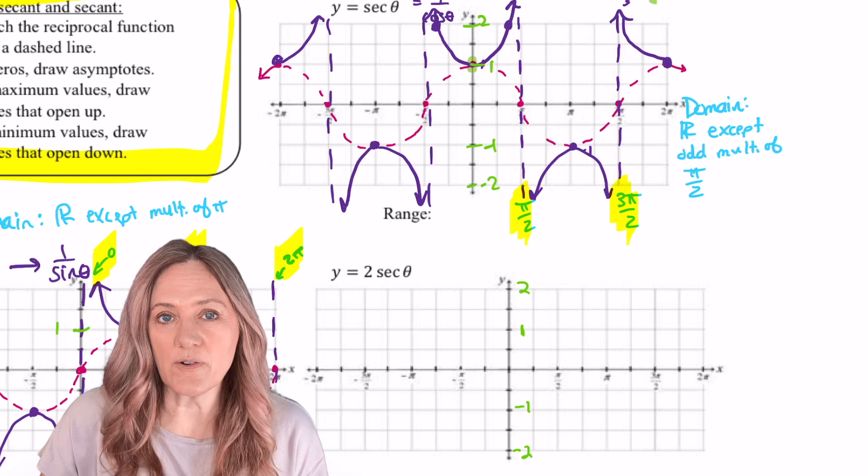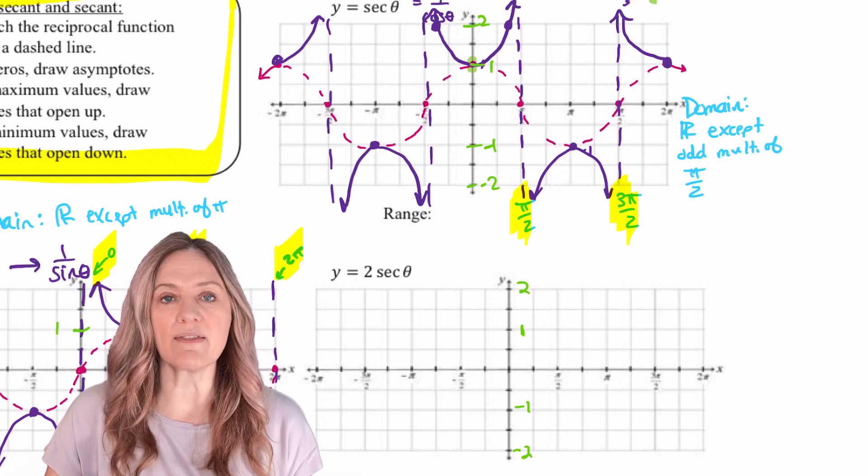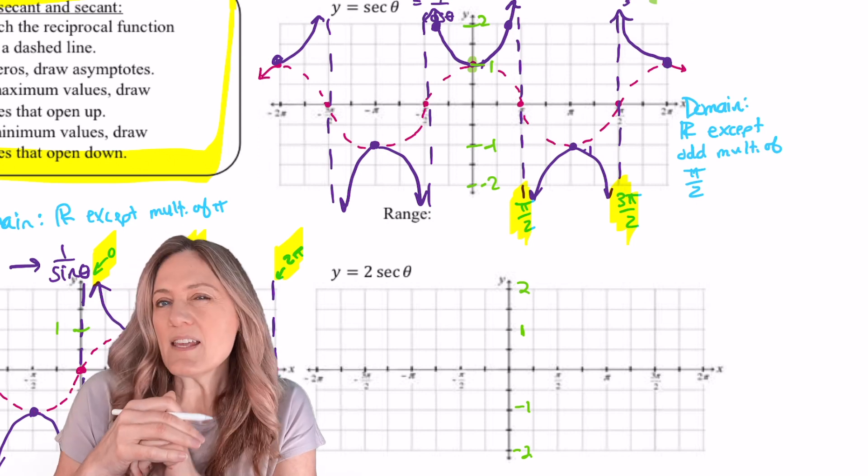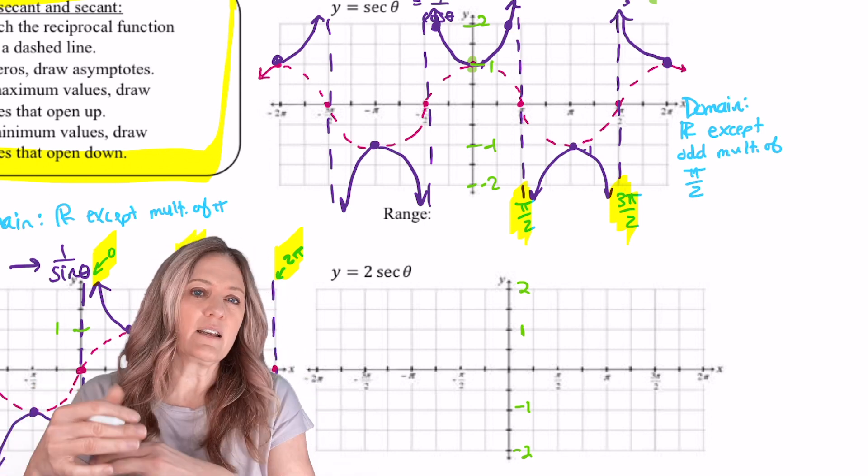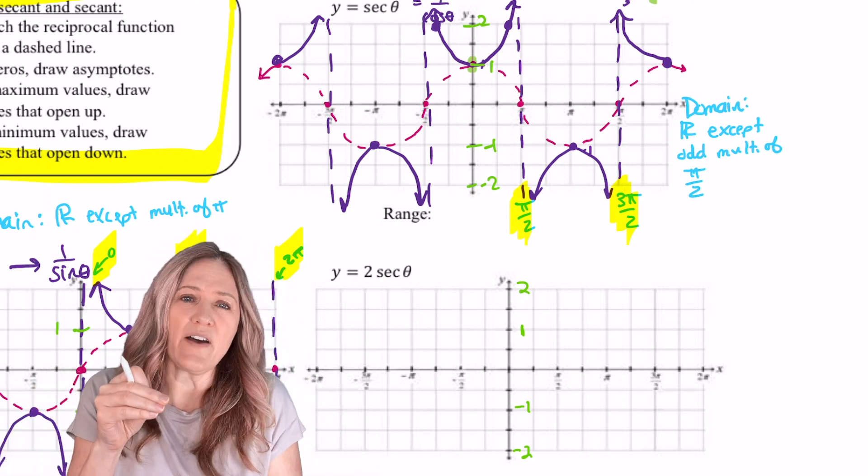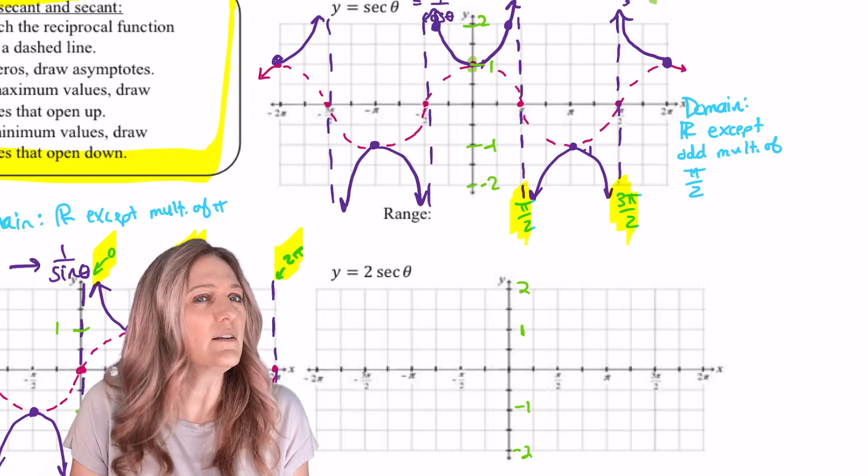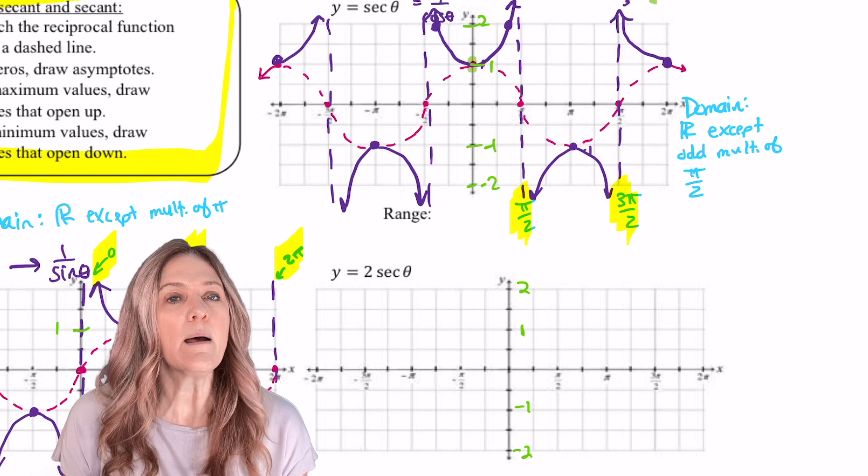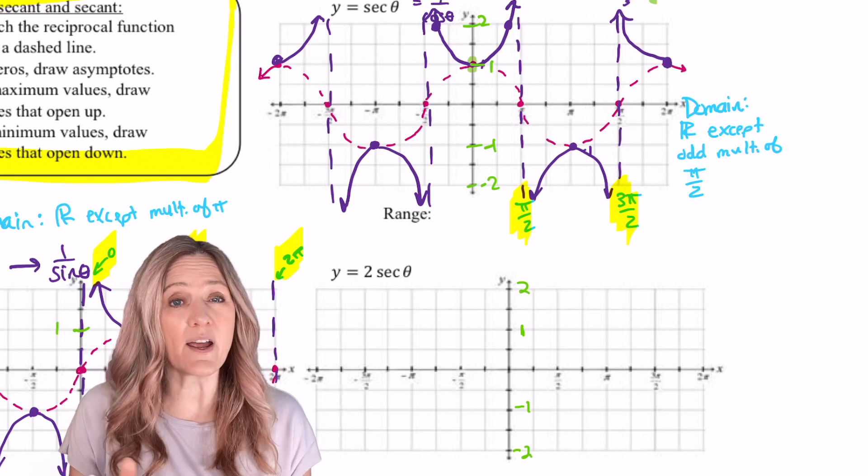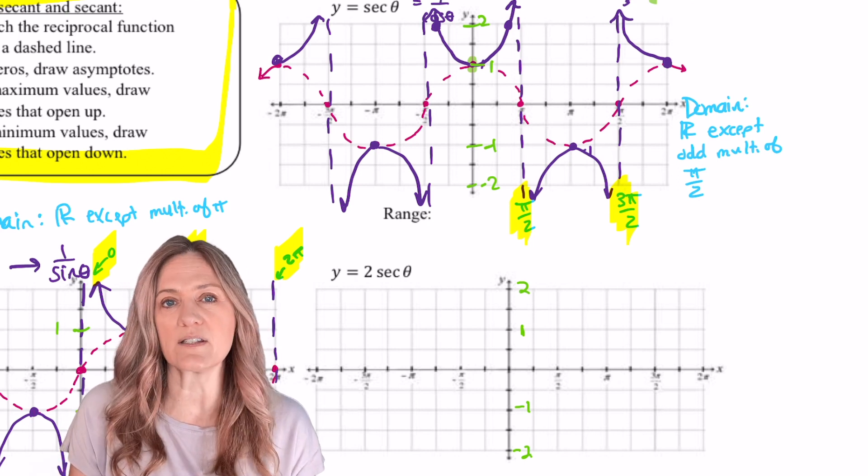Now we're asked to graph y = 2sec θ. We see the graph of secant right above. So we could very easily just stretch those y values by a factor of 2, right? So 1 times 2 is 2, 2 times 2 is 4, and so on. But what happens if we're asked to graph this and we don't have the graph of secant right in front of us? What's one possible way we could do it?